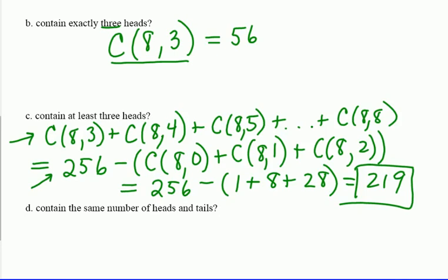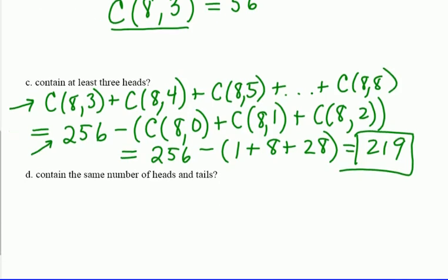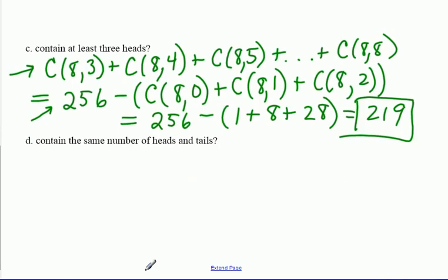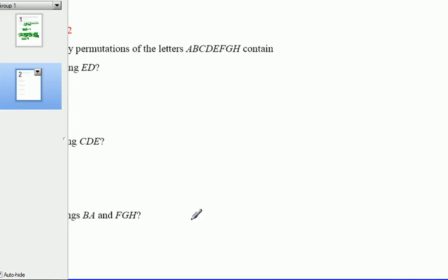Okay, so part D: contain the same number of heads and tails. Alright, well if I'm going to contain the same number of heads as tails, that means the number of heads that I'm going to have is four, because then there'll be four tails of course. And if you work that out, that's 70. Okay, pretty straightforward.